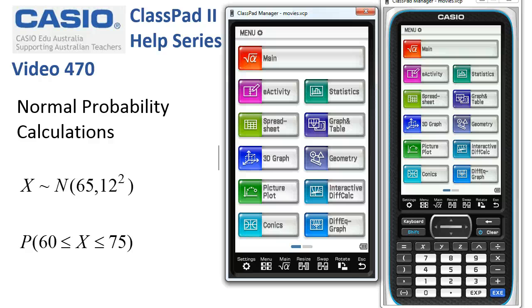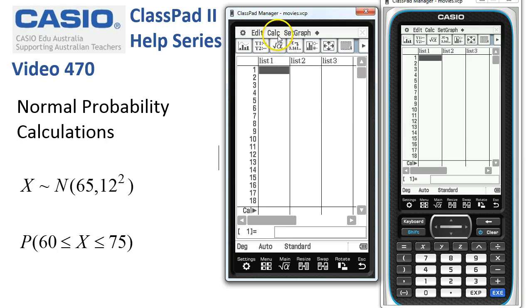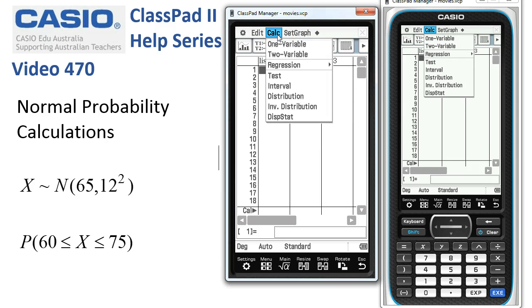Normal probability calculations in statistics. We'll tap on the statistics icon and the distributions are found under the calc menu.